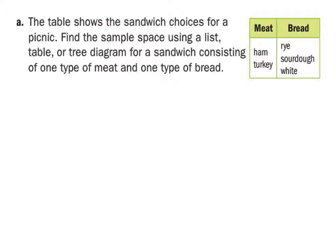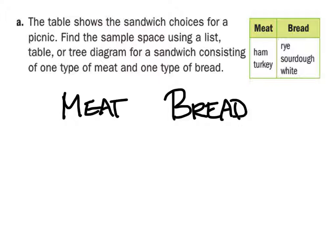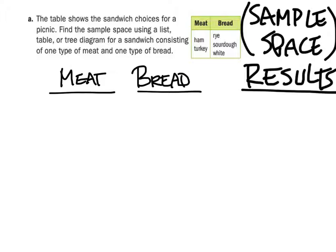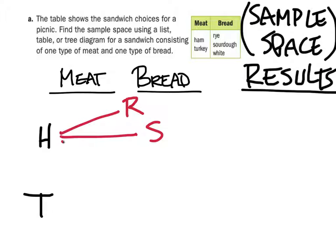All right, let's look at this one. We want to find the sample space using a list. It's not even finding the chances of getting something made with sourdough — we have to assume that all of these can be equally likely chosen, like a sandwich shop where you just take a risk on what you get. The first thing you've got is meat, and then you've got bread. So you've got meat and bread, and from there we will have our results. Let's list the types of meats — we've got ham. I'm just going to use the first letter. So ham: what types of bread can I get? I can get rye, sourdough, or white.